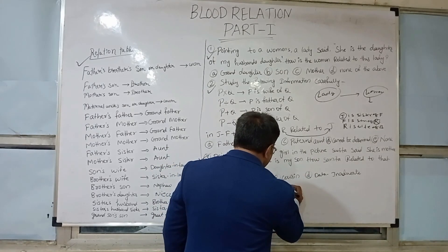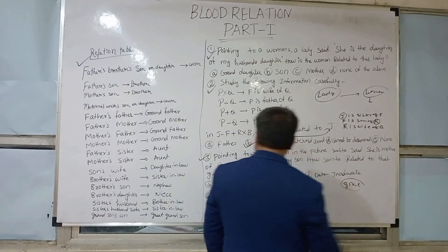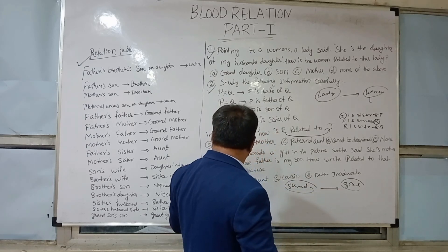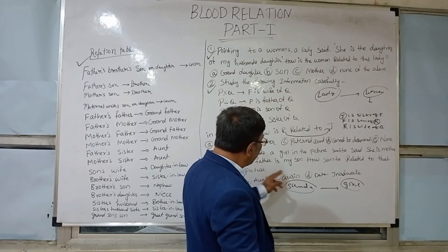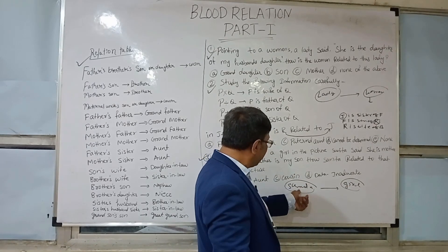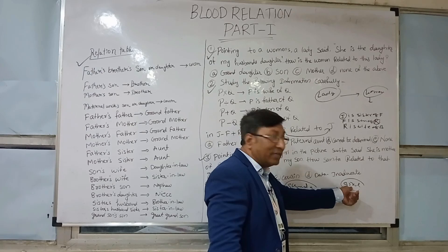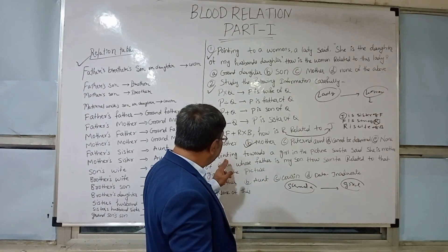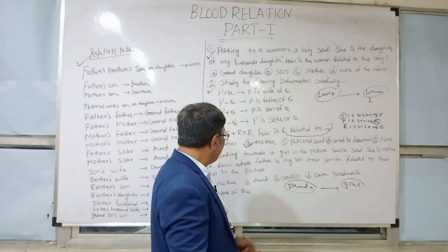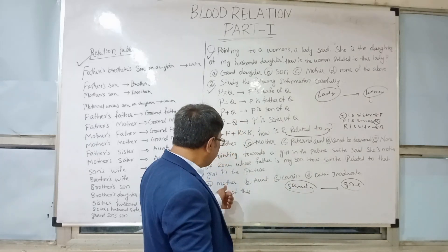Pointing towards a girl in the picture, suppose this is Sunita and here is the girl. Sunita said: that girl is the mother of Renu, whose father is my son. That means the girl is the mother of Renu, and Renu's father is Sunita's son. So Renu is Sunita's son's child, and this girl is the mother of Renu. The options are: Mother, Aunt, Cousin, and None of these.